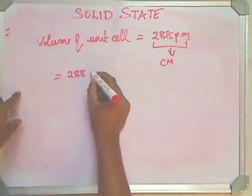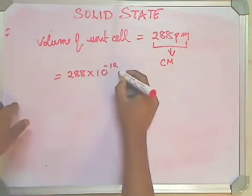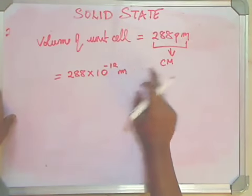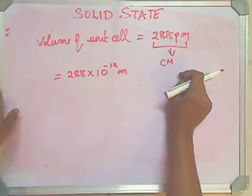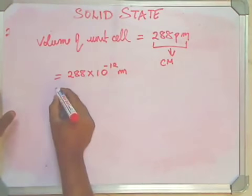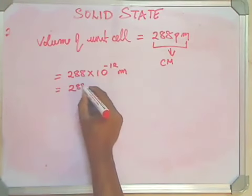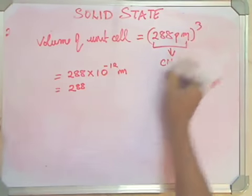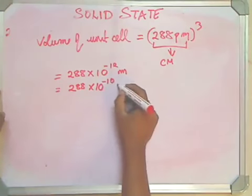You convert this to meter, it comes to 288 multiplied by 10 to the power of minus 12 meter. You can do this if you have a good understanding of the various units used for measurement, micro, milli. If you're familiar with them, you can derive these different values. Then convert this to centimeter, 288 multiplied by 10 to the power of minus 10 centimeter.